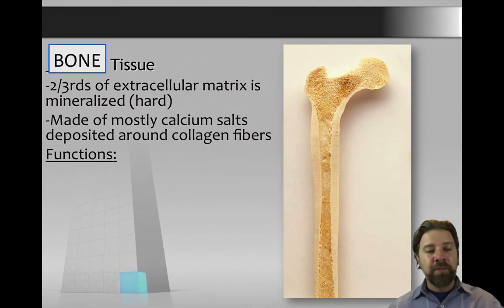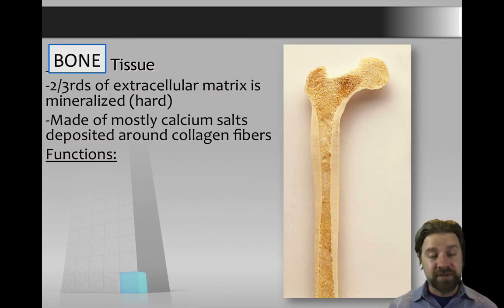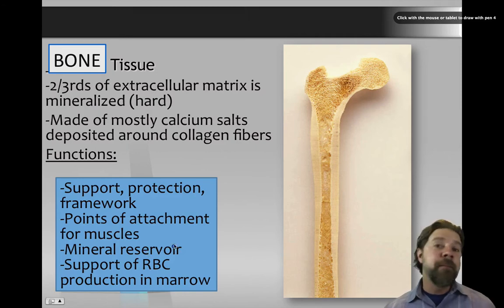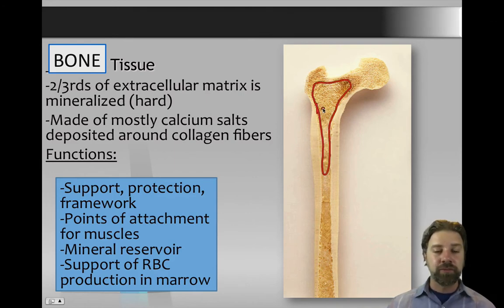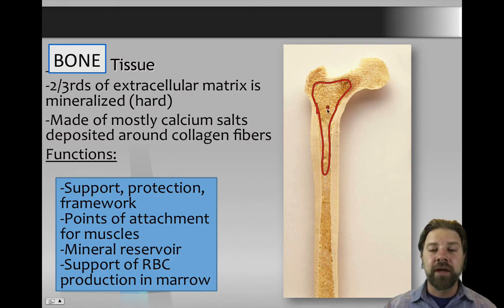Bone is also connective tissue. Two-thirds of its extracellular matrix is mineralized — calcium salts deposited around collagen fibers. Bones provide support, protection, and points of muscle attachment; they are a mineral reservoir and support red blood cell production from bone marrow, where stem cells originate in the hollow central portion.